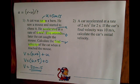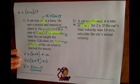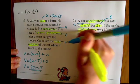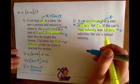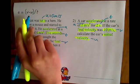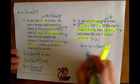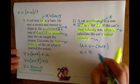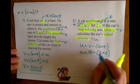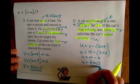For the second question, we highlight: an acceleration of 2 meters per second squared — that's a. A time of 2 seconds — that's t. A final velocity of 10 meters per second — that's v. We need to calculate the initial velocity u. Rearranging: u equals v minus a times t, so u equals 10 minus 2 times 2, which is 10 minus 4, giving an initial velocity of 6 meters per second.